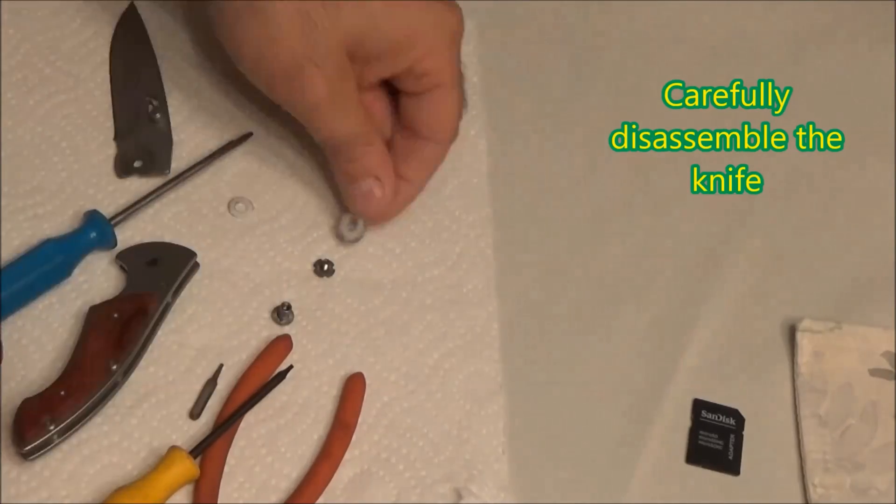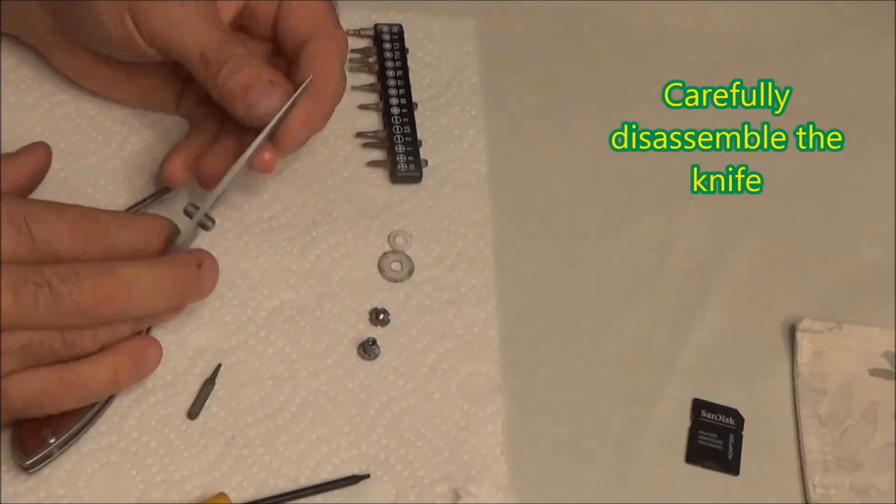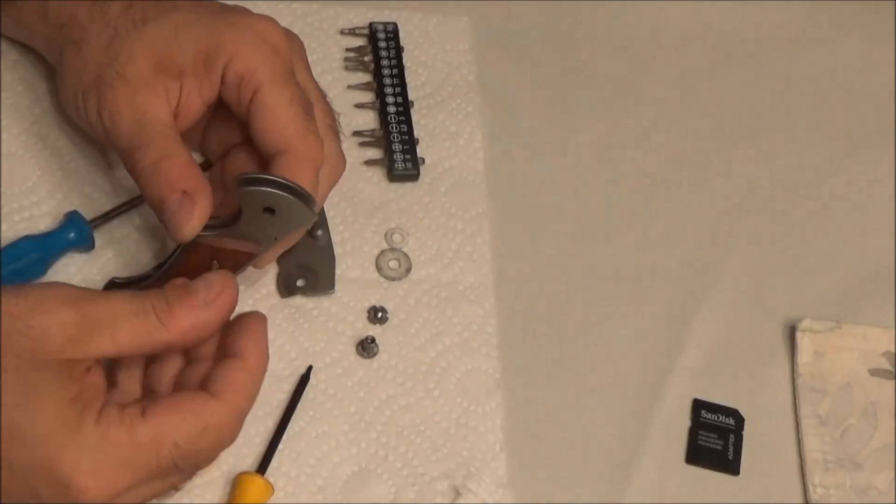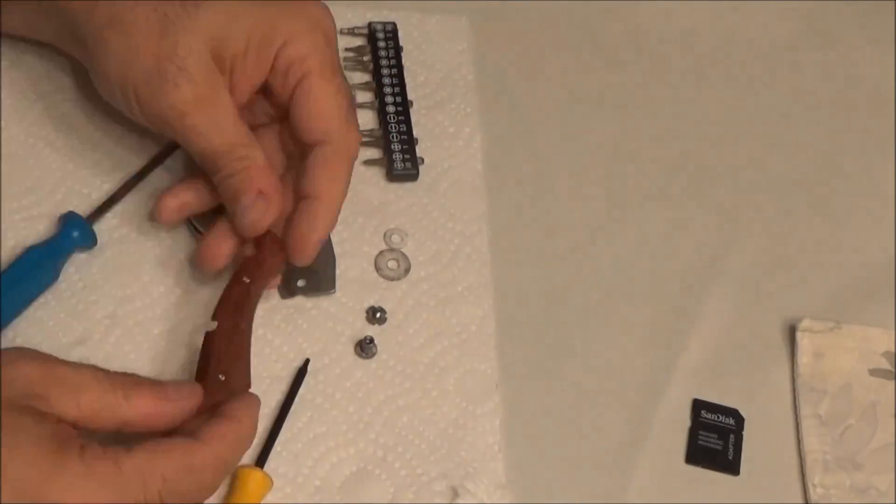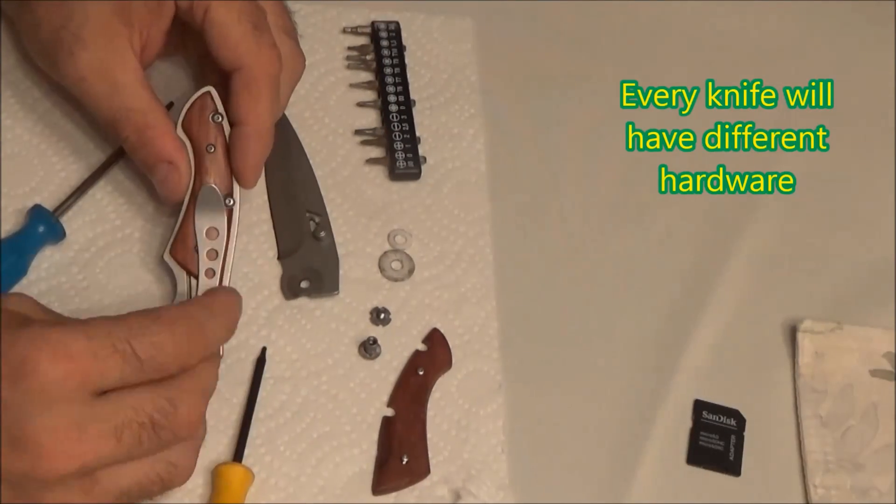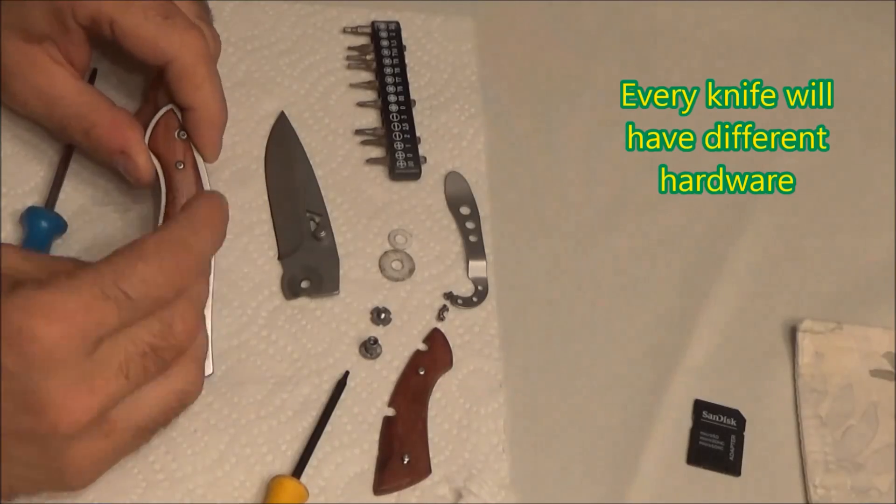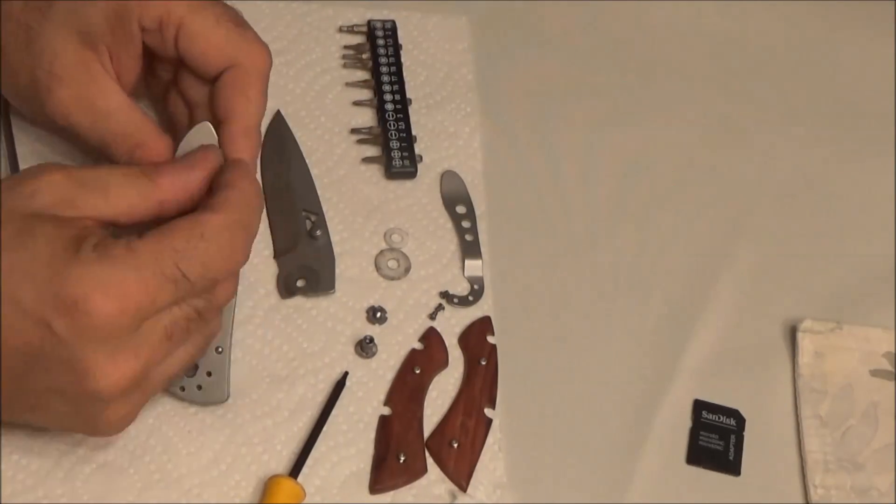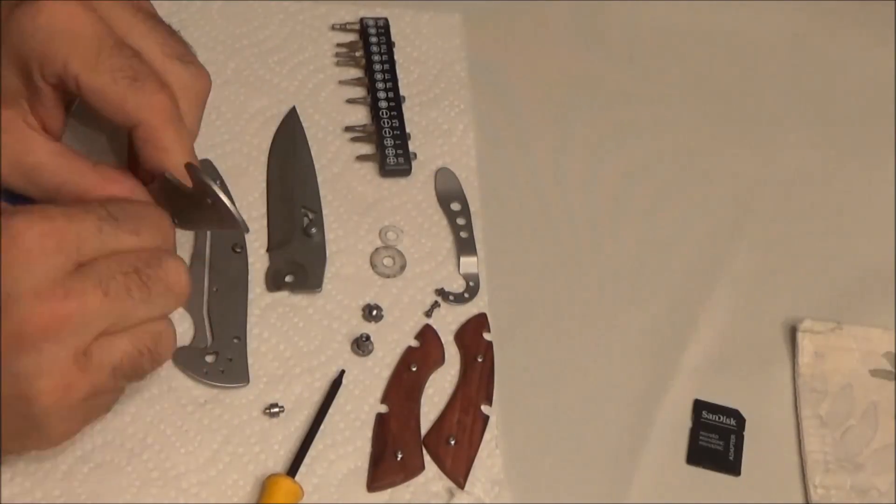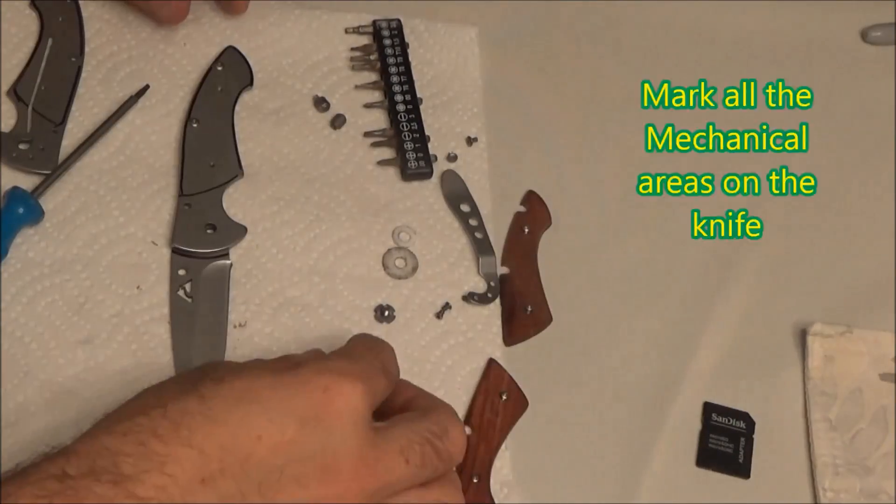First of all, you carefully disassemble the knife and make sure you keep all the little components that come out, because it's very important that you put them back the same way. I'm pulling off the pocket clip and the scales off the side, separating the two side plates, and removing some of the other hardware.